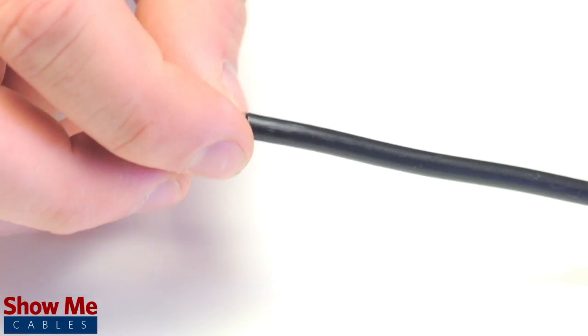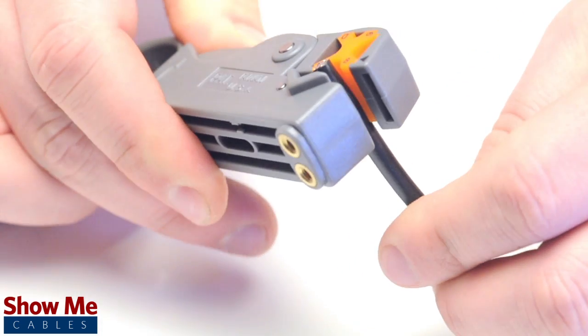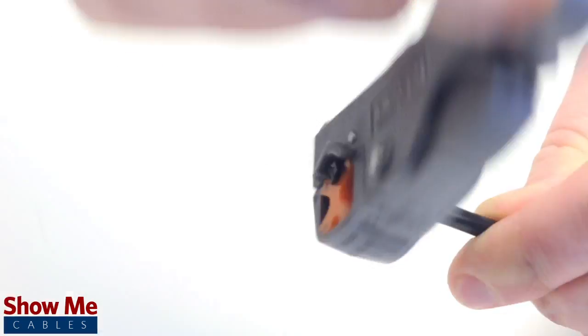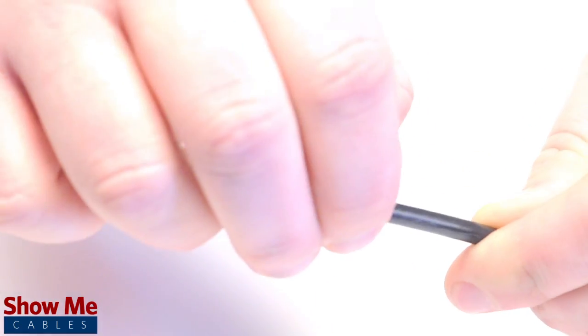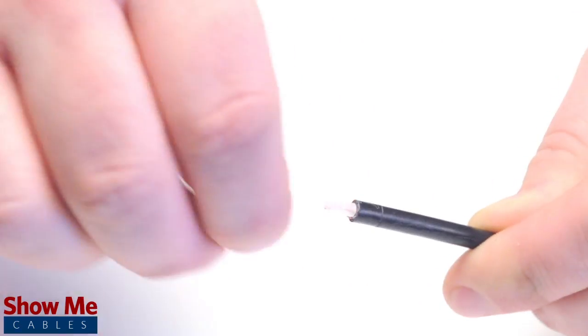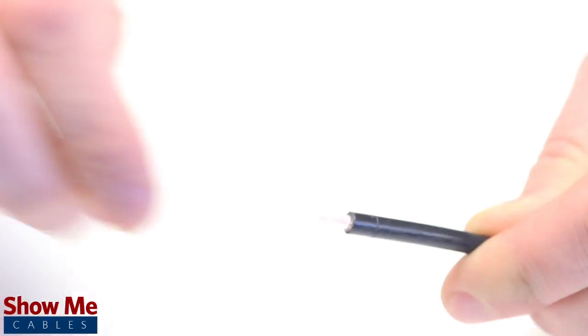Start by inserting the ferrule over the outer jacket of the cable. Then using your cable stripper, strip back the outer jacket and dielectric. The advantage of using a cable stripper is that it will strip back the jacket and dielectric at the same time.